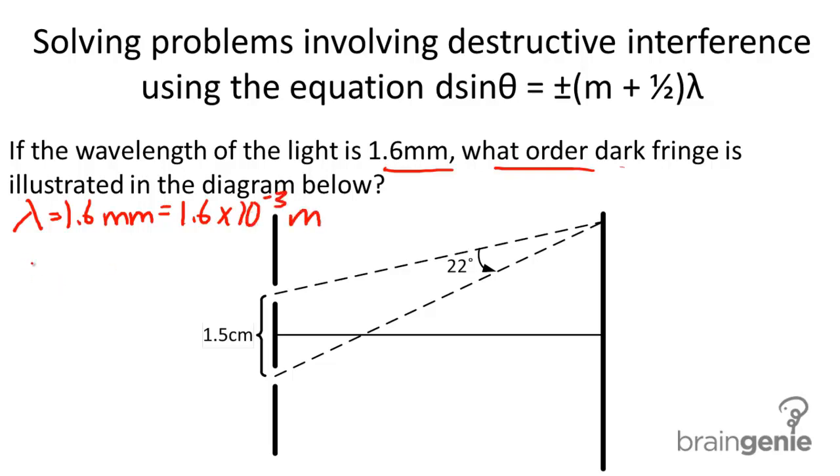In addition, we have the angle, which is given in the diagram, of 22 degrees. And we have the distance between the slits, d, of 1.5 centimeters, which equals 1.5 × 10^-2 meters.